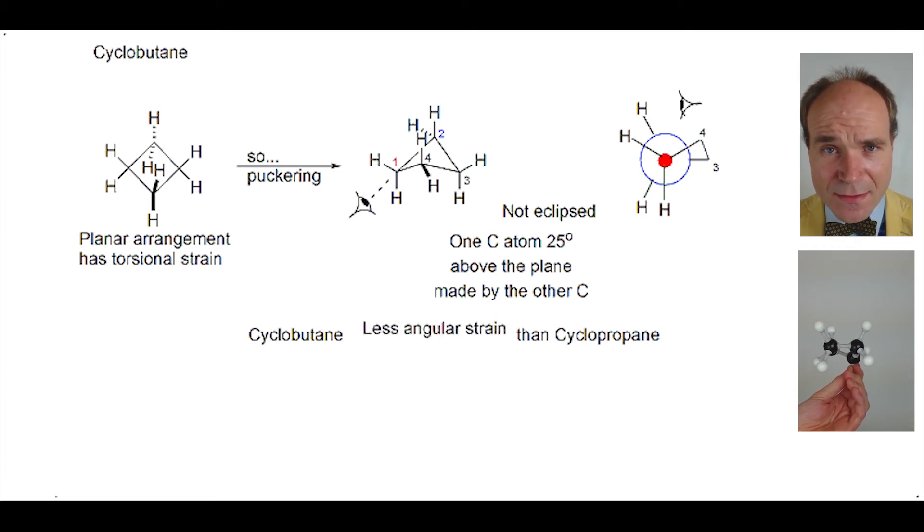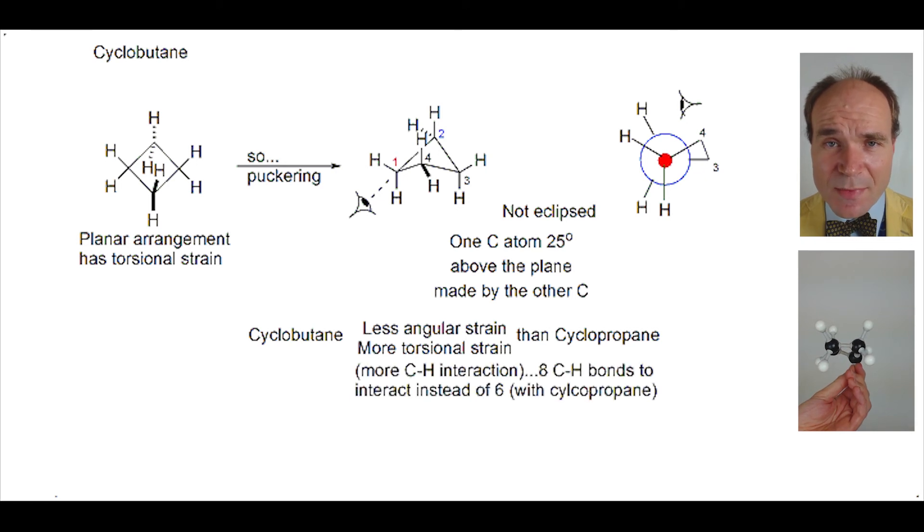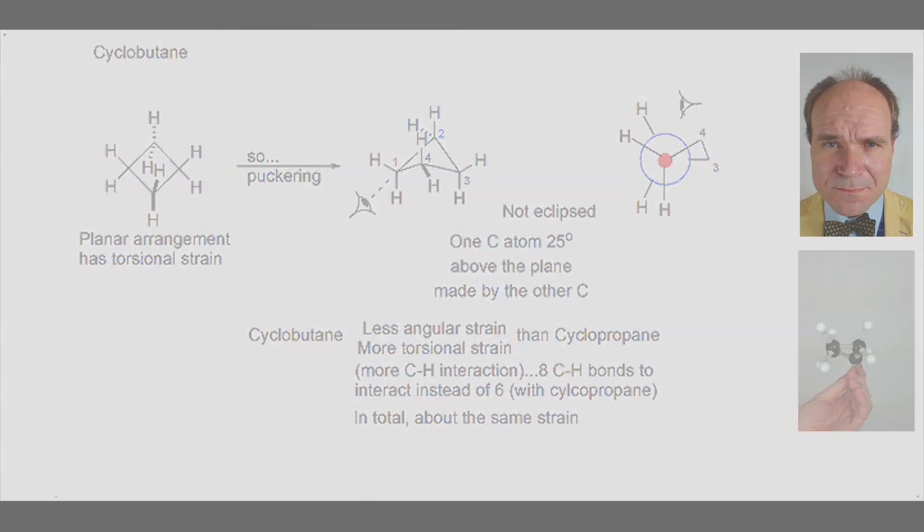With cyclobutane we have eight hydrogen-carbon interactions, whereas with cyclopropane there were only six hydrogen-carbon interactions. Overall, the amount of strain in cyclopropane and cyclobutane are about the same, but cyclobutane does have a little bit more strain than cyclopropane.